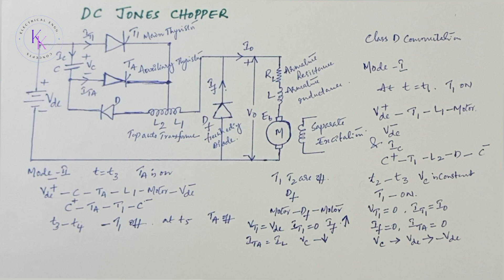This cycle repeats when the main thyristor is triggered. This is how the Jones Chopper works.